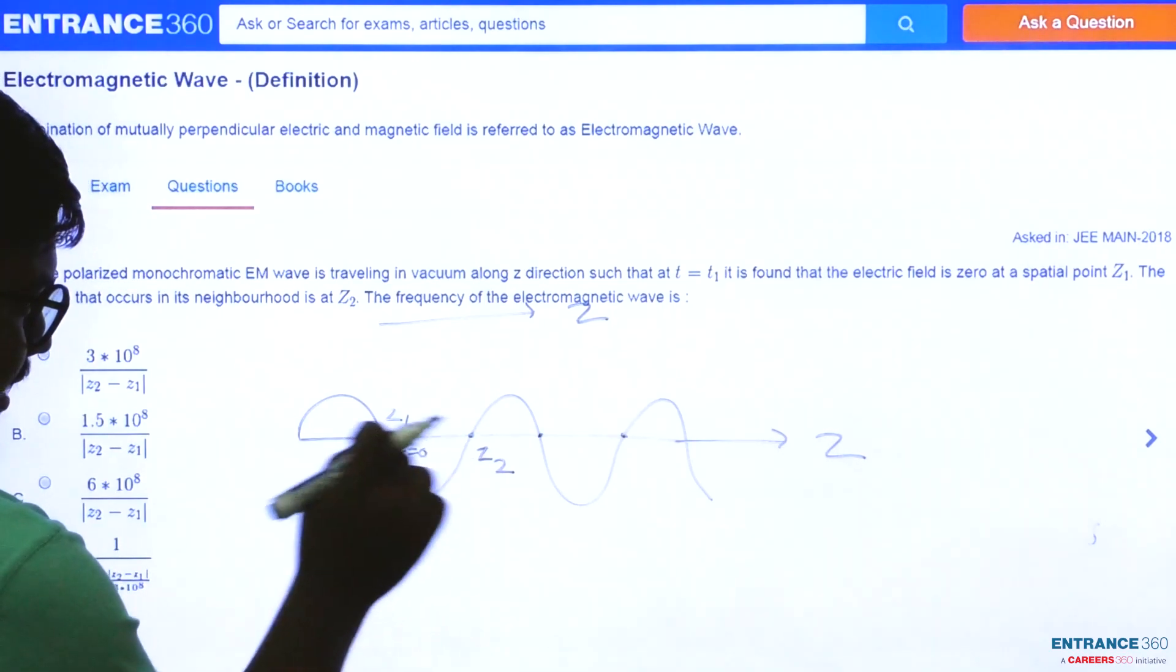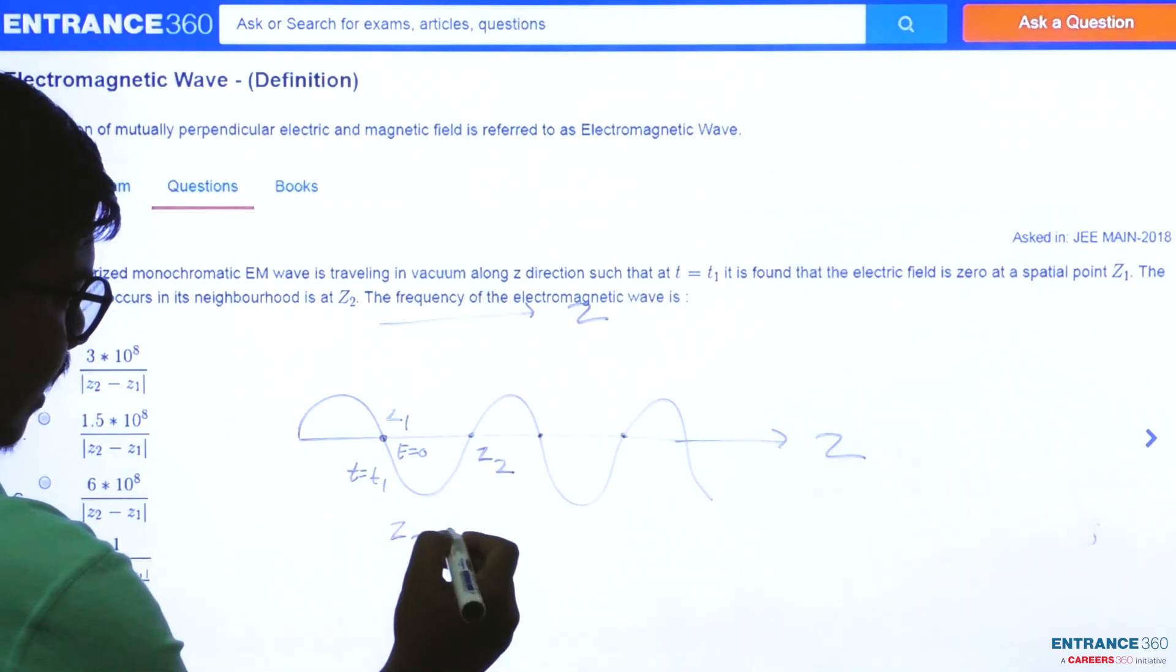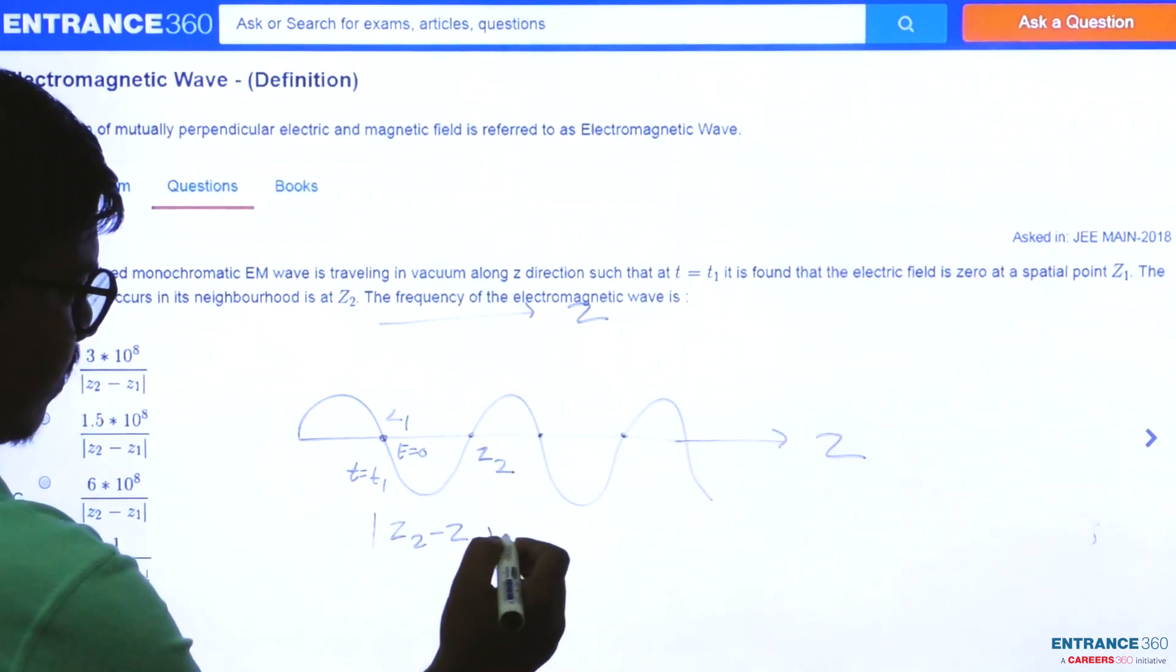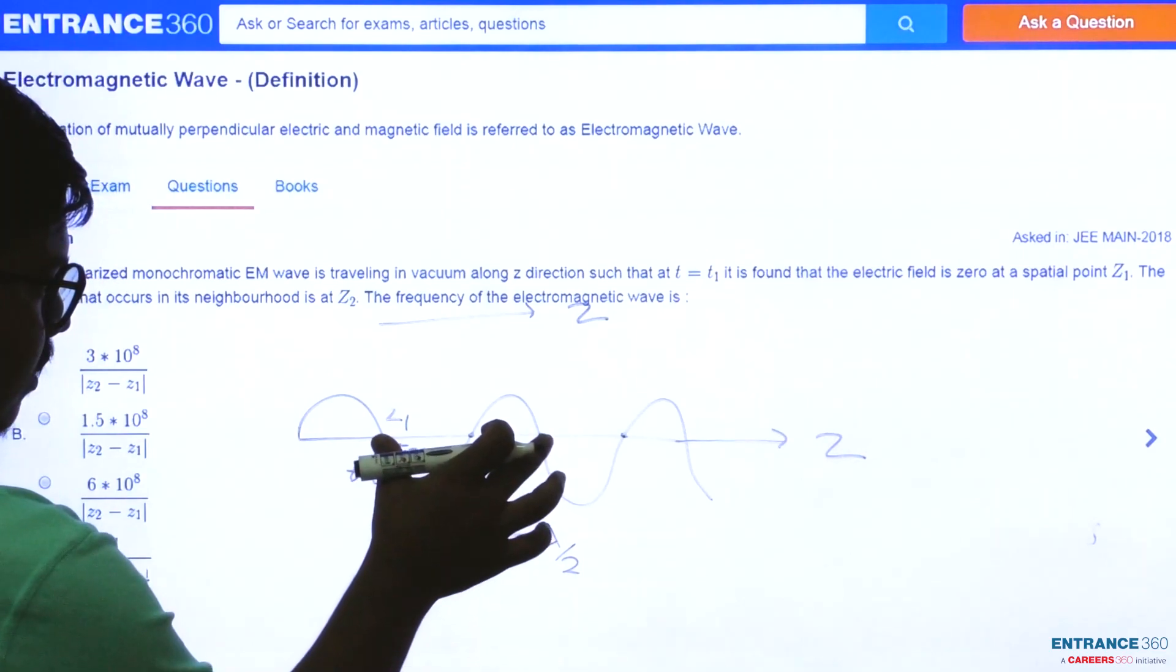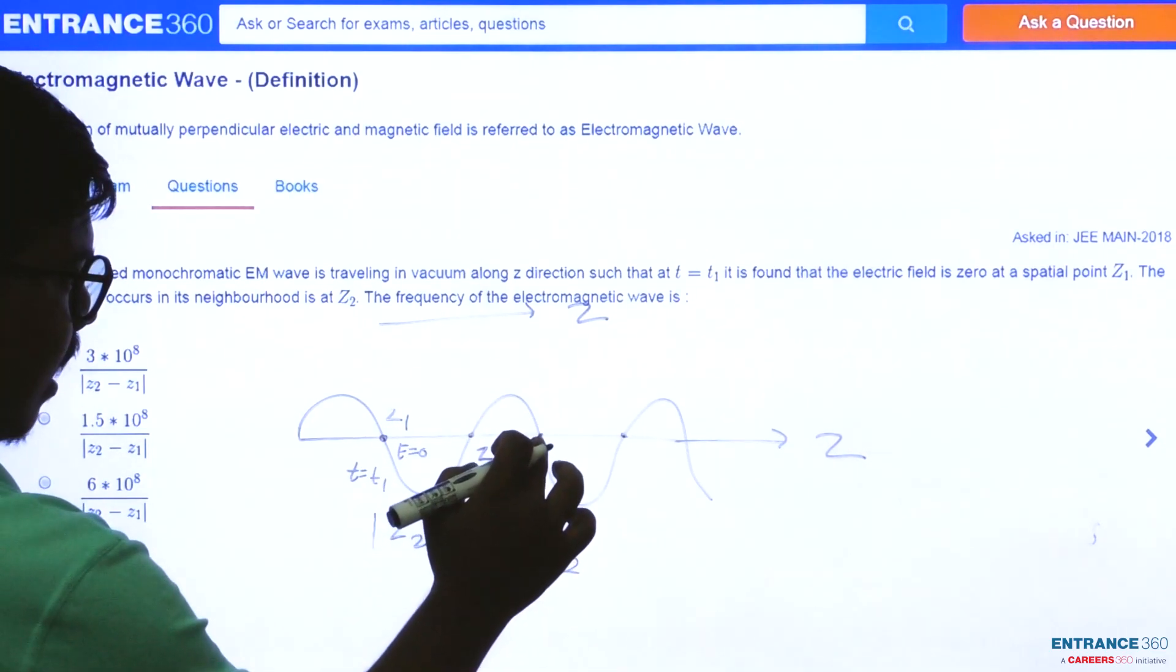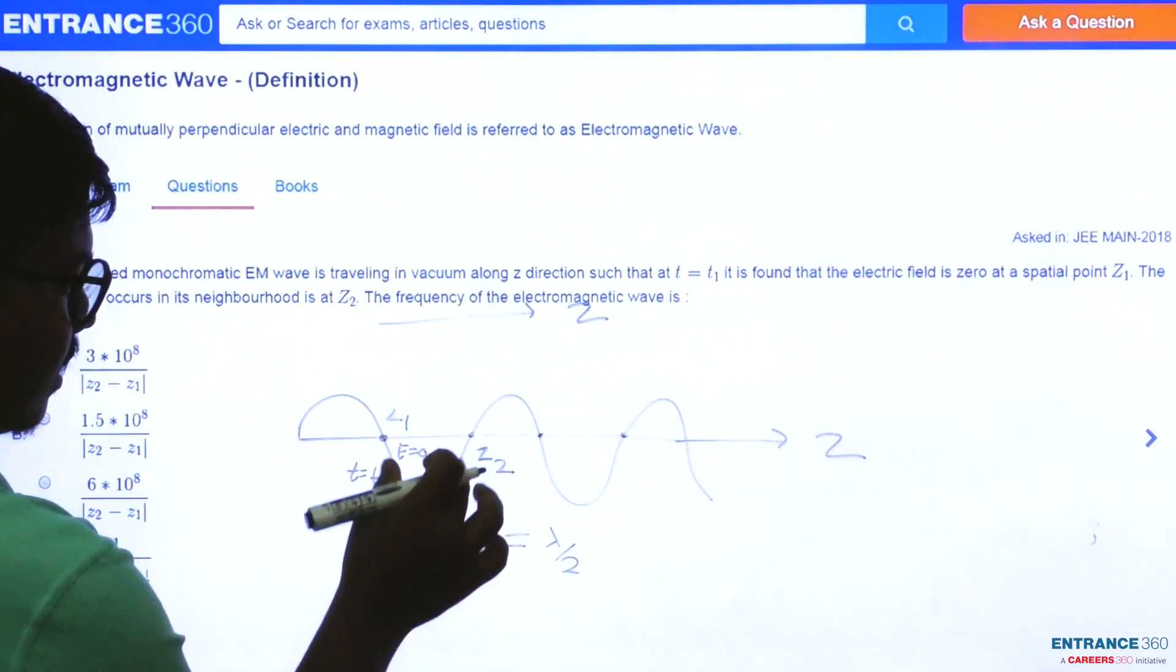So we can clearly say that z2 minus z1, this quantity will give us value of lambda by 2. Because this whole quantity is lambda and this quantity is lambda by 2.